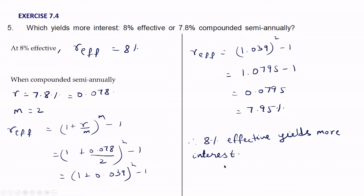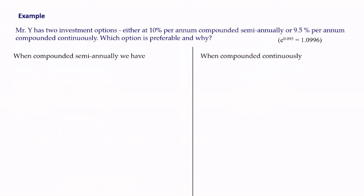These are the various exercise questions from exercise 7.4. Since there is no question in the exercise where we have to find the effective rate when compounded continuously, I have taken an example question. Mr. Y has two investment options: either 10% per annum compounded semi-annually, or 9.5% per annum compounded continuously. Which option is preferable and why?